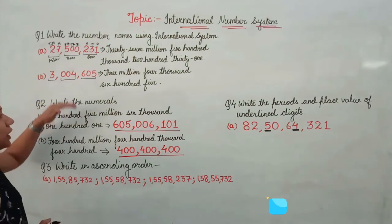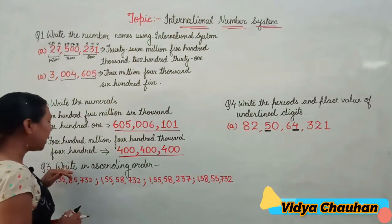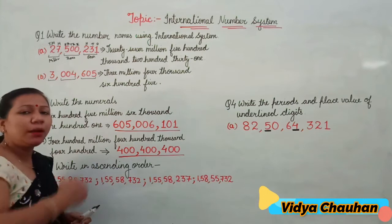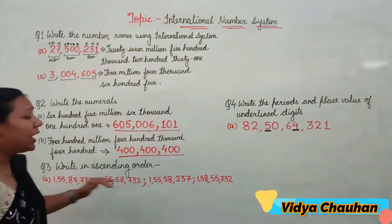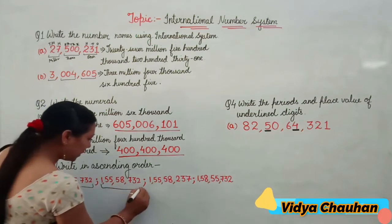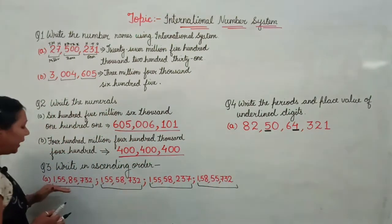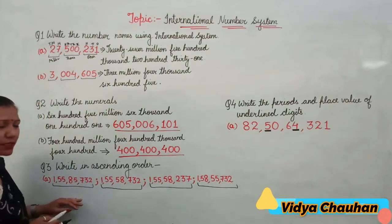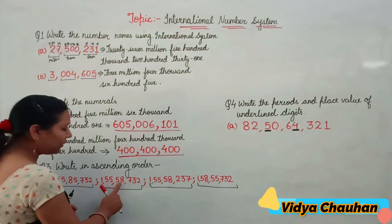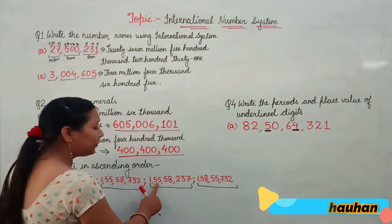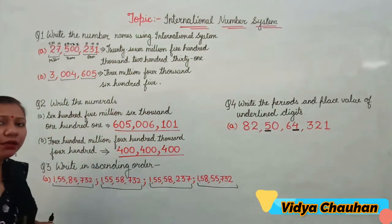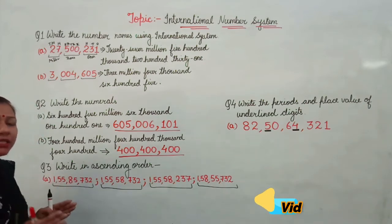I hope both concepts are clear. Moving to the third question: arrange the given numbers in ascending order — from smallest to biggest. There are four numbers given, all in the Indian number system: 1,55,85,732; 1,55,58,742; 1,55,58,237; and 1,58,55,742. To compare, we start from the extreme left digit. At the crores place, all four numbers have 1 — they are the same.